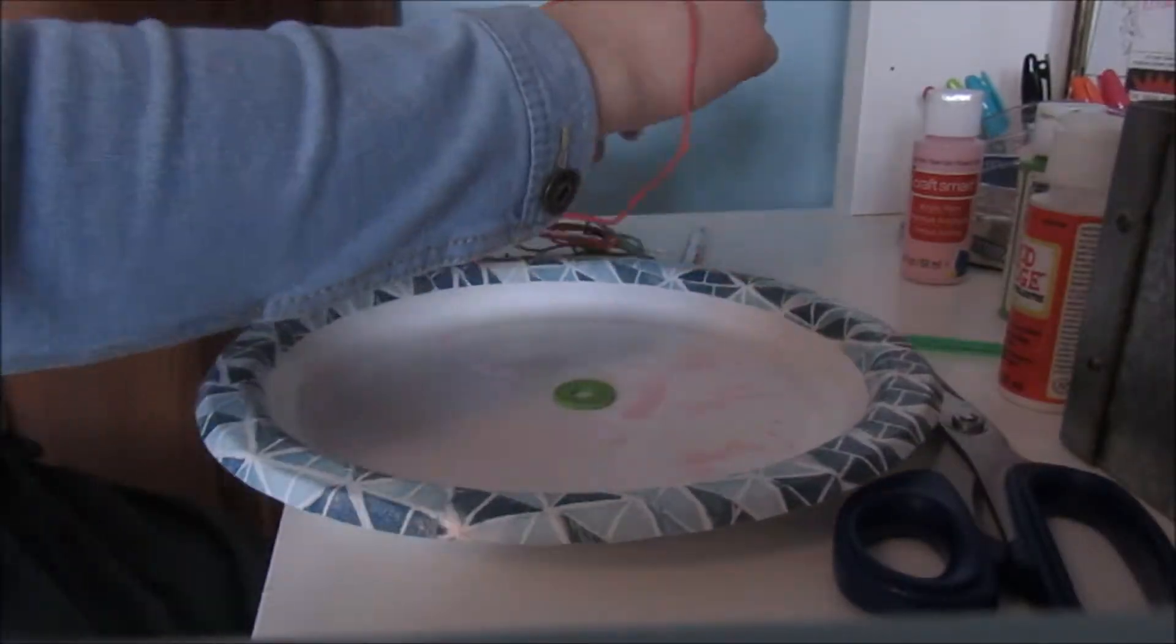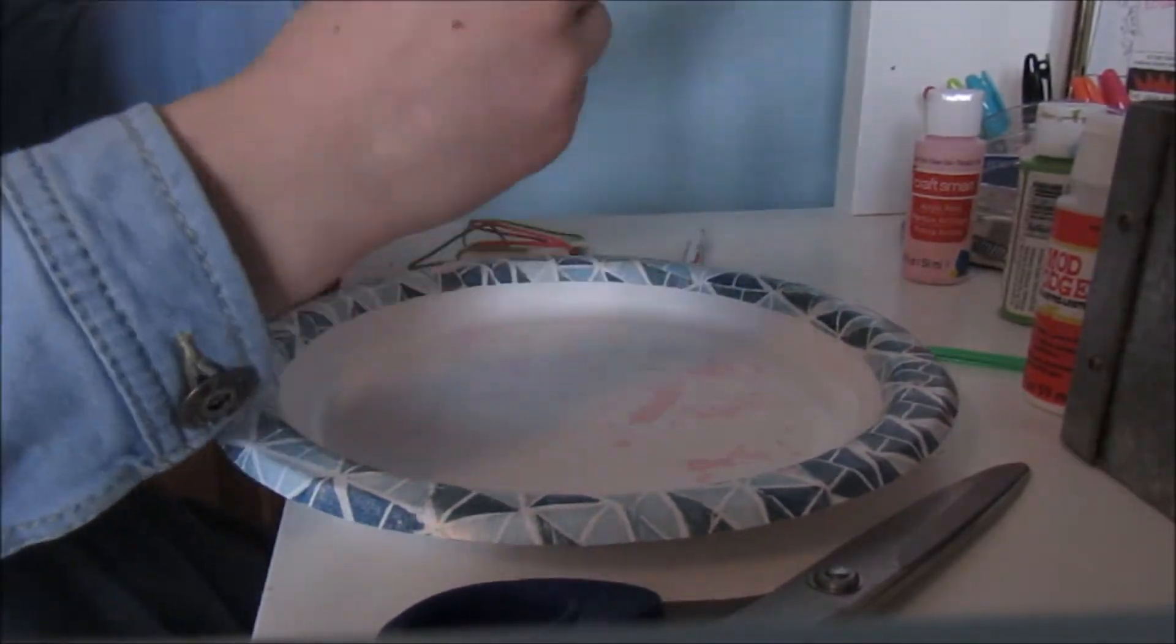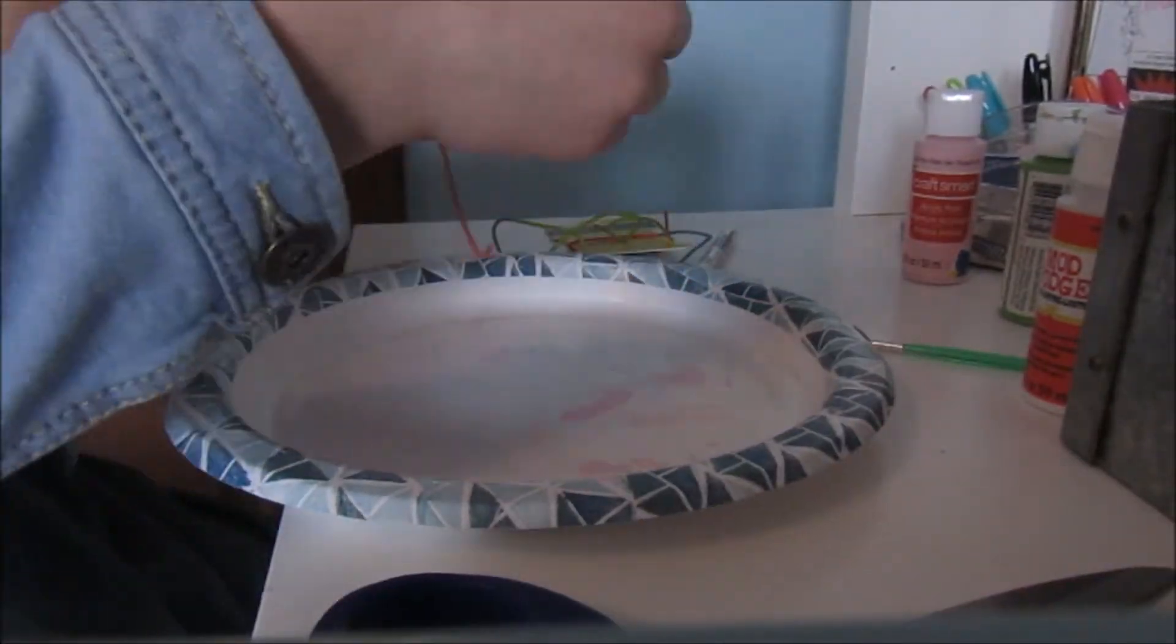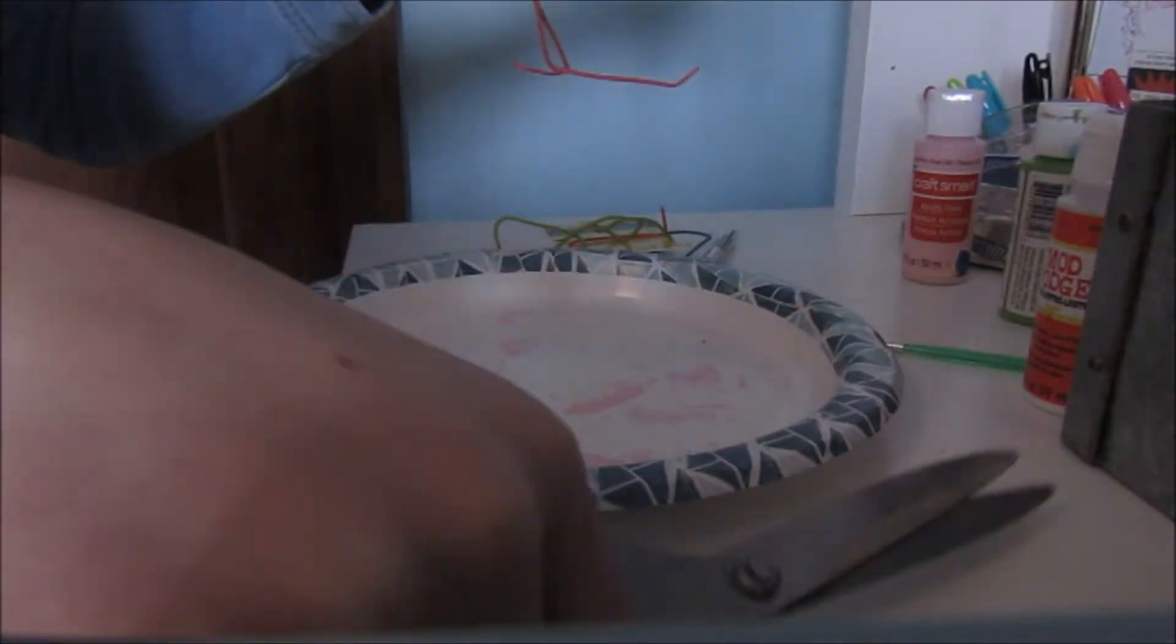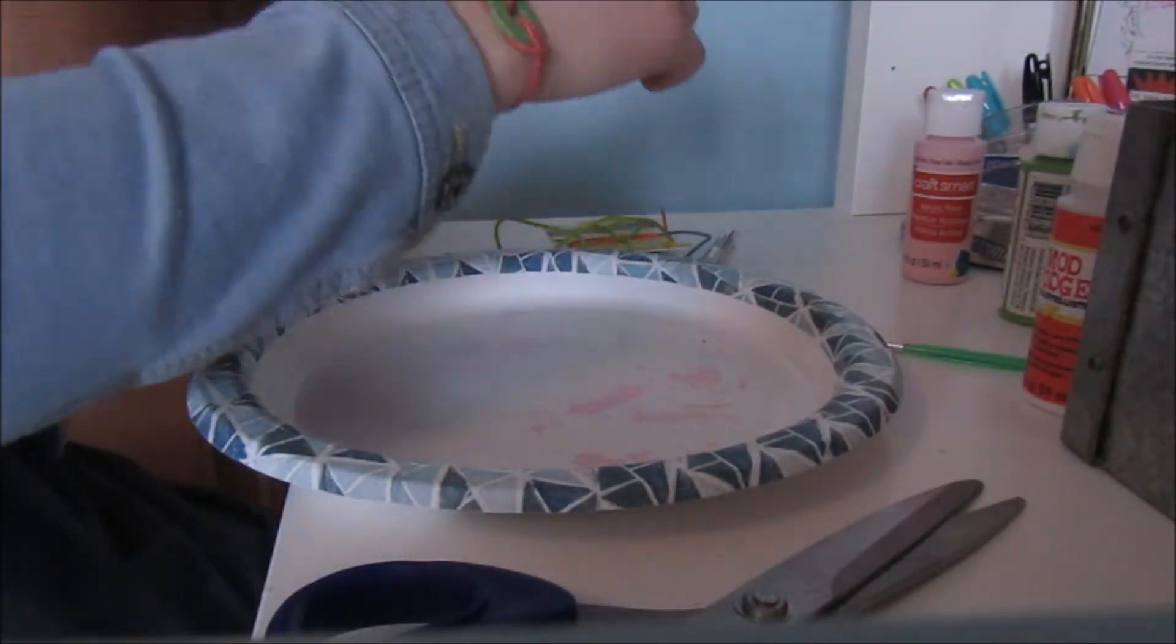Then grab your cording and cut it, and you can tie it around the washer in any way you want. You can move it through the middle, which I think is the easiest way. Grab your scissors and trim the ends.